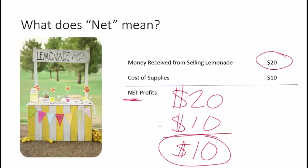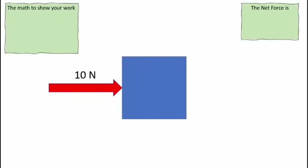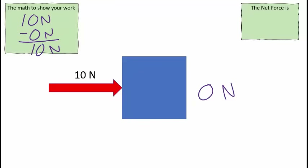Same exact concept here, except instead of money, we're going to be talking about force. Let's take a look at the most simple net force problem we can have. Here we have 10 newtons of force pushing to the right. There's no force on the opposite side, so we could say that's 0 newtons. The 10 newtons is going to win. The math I would show: I have 10 newtons, nothing on the opposite side, so my net force is 10 newtons to the right.